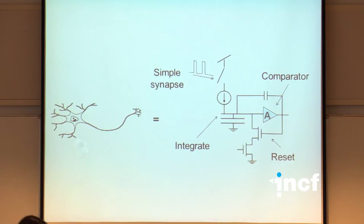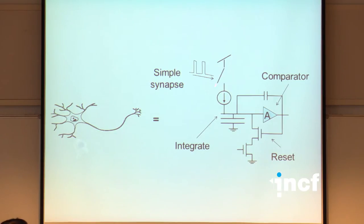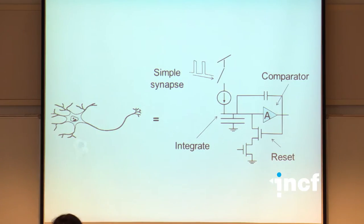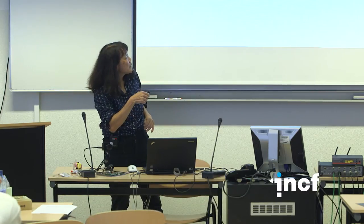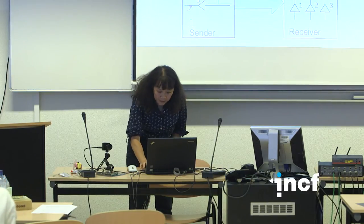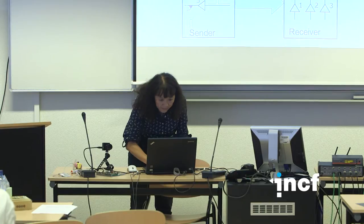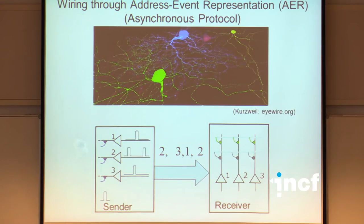For a synapse implementation, the simplest and cheapest option in terms of transistors is to put a switch transistor in series with the current source. Every time a spike arrives, we close the switch and dump some charge, then open the switch again when the pulse ends. More sophisticated synapse models with time constants use about five transistors.